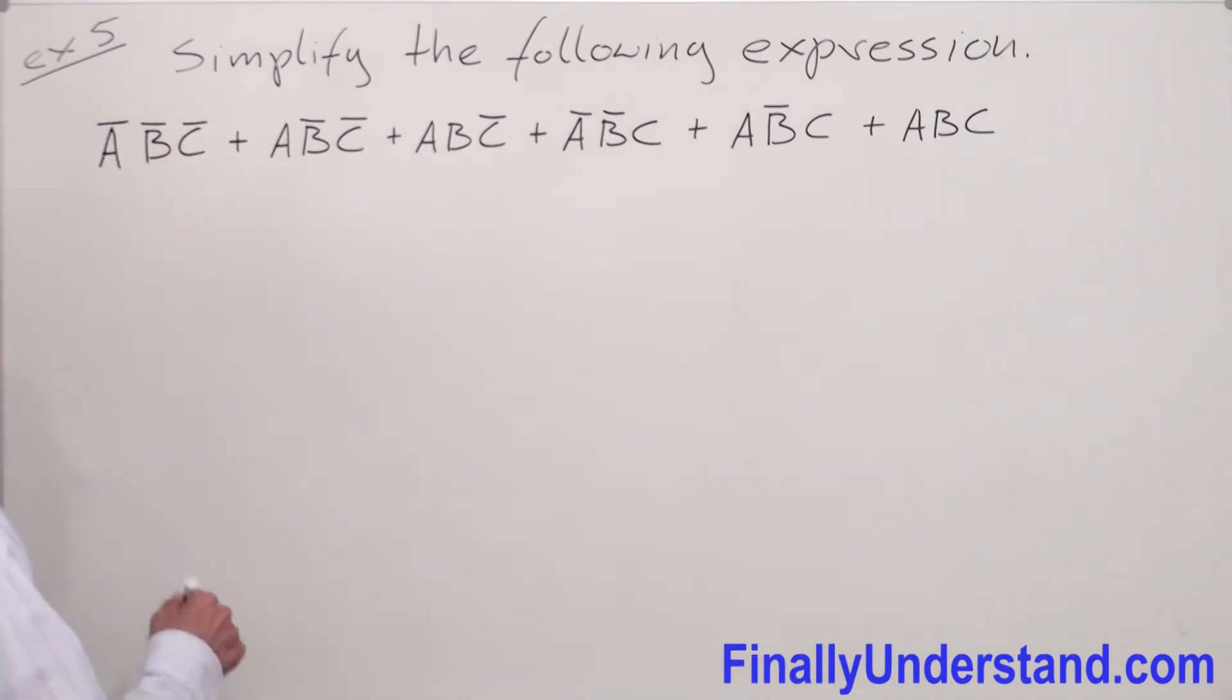Let's take a look what we can factorize from these two terms. We have B̄C̄ and B̄ and C̄, means we can factorize from these two terms B̄C̄.